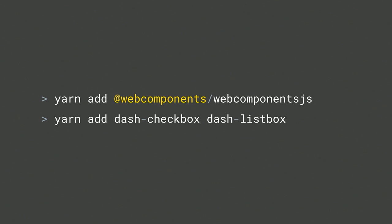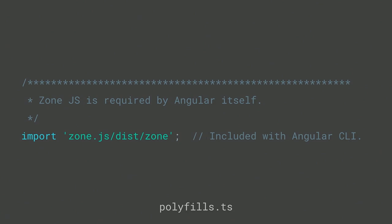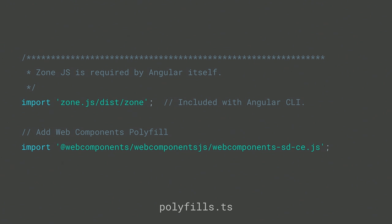Now I'll add the polyfills needed to work with web components. We've released these tools on NPM, so I can run yarn add @webcomponents/webcomponentsjs. For our project, I'll also add two specific components: dash-checkbox and dash-listbox. Within the Angular project, I'll find the polyfills.ts file — a file with a built-in tutorial guiding you on which polyfills to include based on your browser targets. Right below the zone.js import, I'll add the web components polyfill.